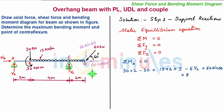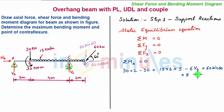All moments are now accounted for. There is no moment due to VA or HA since both pass through point A. Setting the summation of moments about A equal to zero, the only unknown is VC. Solving the equation gives VC = 120 kN. Since the result is positive, the direction is confirmed as upward.